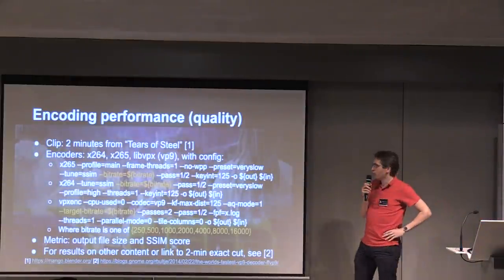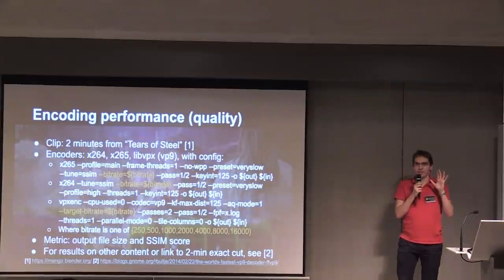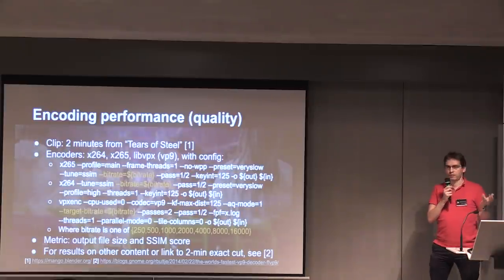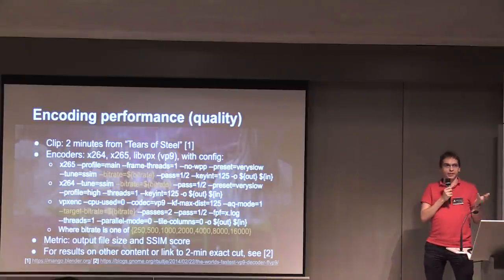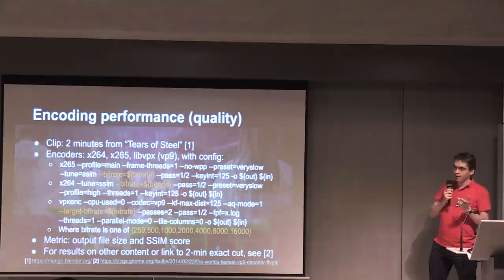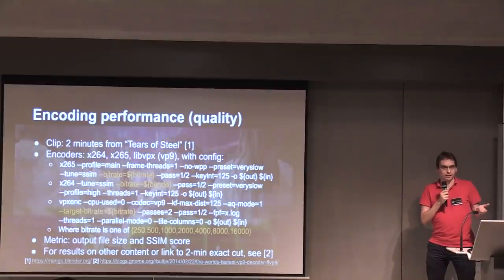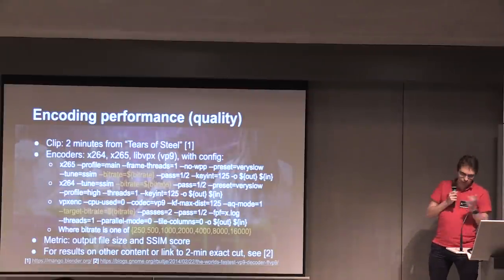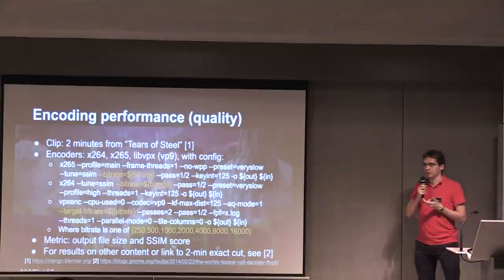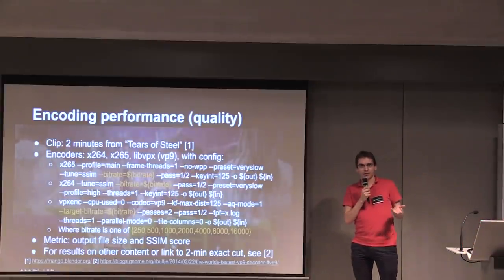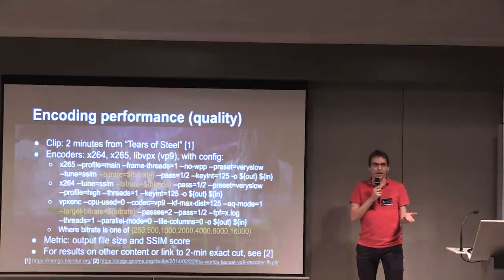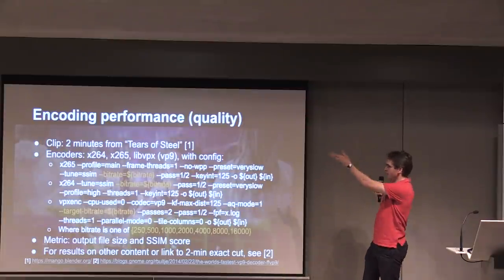I want to start by talking about encoding. What did I do? I took a two-minute clip of this movie called Tears of Steel. I took this movie because I can freely download it — it's open source and free — and it's actually a good movie for video encoder testing. A lot of people use it for this purpose. We encoded that with three encoders: x264, which is supposed to be this amazing H.264 encoder; x265; and VPX to create the VP9 file. You can see the command lines here. What's in orange is the variable I'm changing. The metric I'm looking at — because I need some objective metric — is bitrate over SSIM.